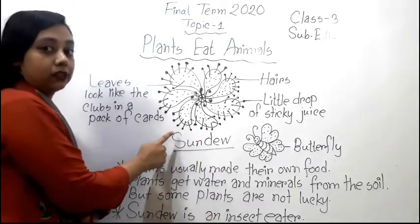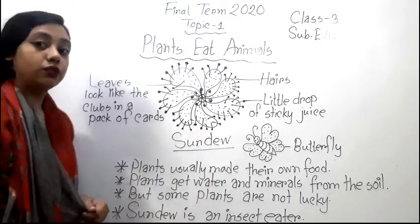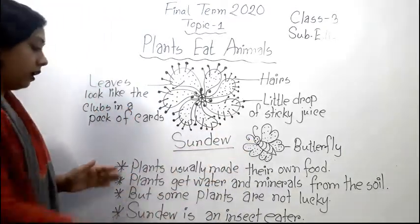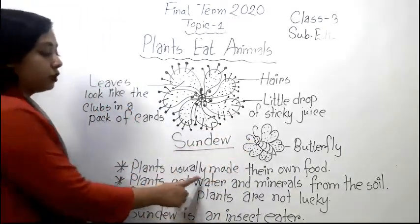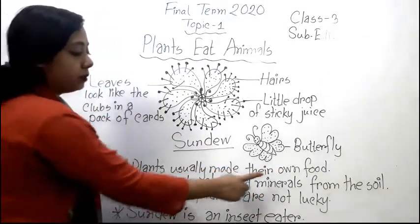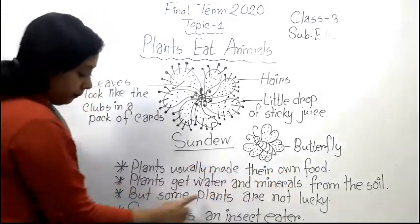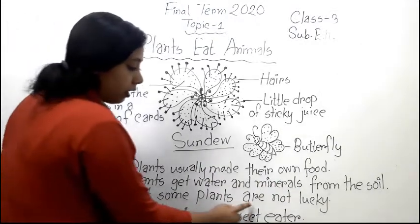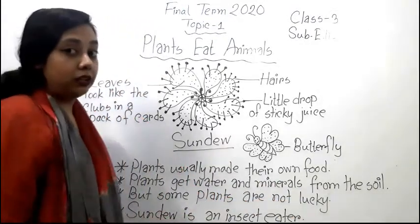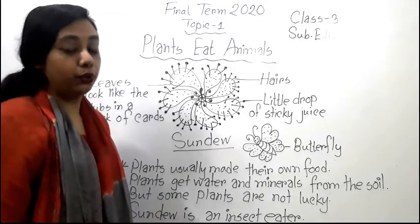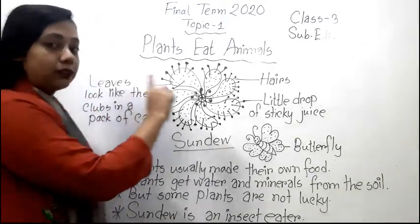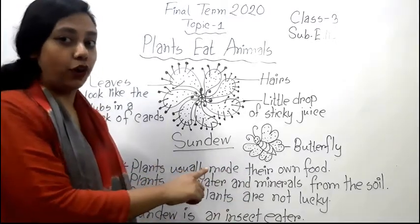So what we learn from today's topic: plants easily make their own food by getting water and minerals from the soil. But some plants are not lucky because the soil is not good everywhere. That is why some plants have to eat insects or butterflies.